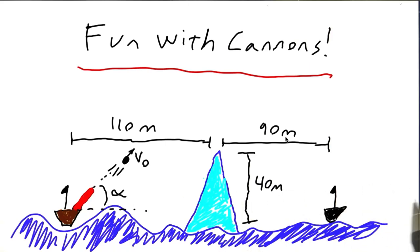For this next problem, imagine that you're the captain of a ship on the high seas, and you know there's some enemy ship about 200 meters away. You want to aim your cannon at some angle alpha and shoot the cannonball with some initial velocity, V0, such that you hit the enemy ship.